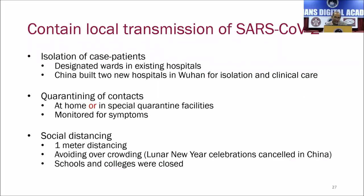Social distancing should be practiced with a one-meter distance. China went into a lockdown, avoiding overcrowding by shutting down everything. You are seeing that happening in various parts of India, including Bangalore — schools, colleges, malls, theaters, restaurants, and bars have all been closed. This experience came from China, it is in the joint mission report, and it is effective in reducing transmission. This is something that needs to be practiced.